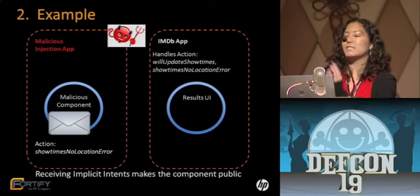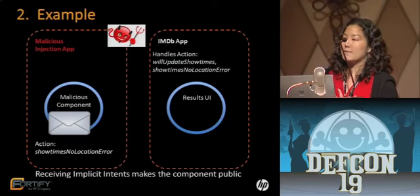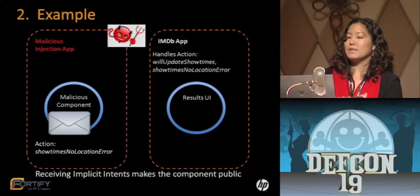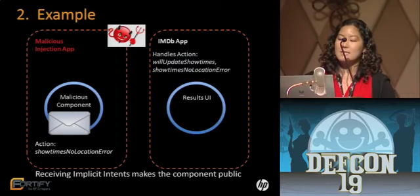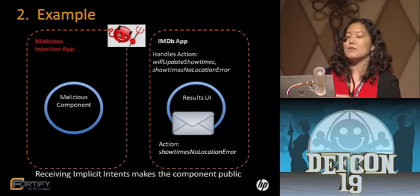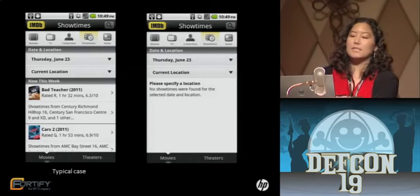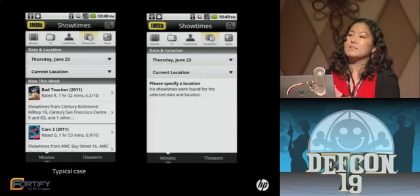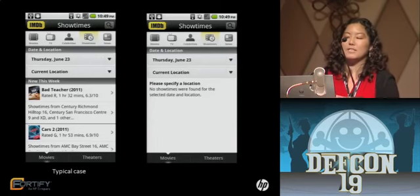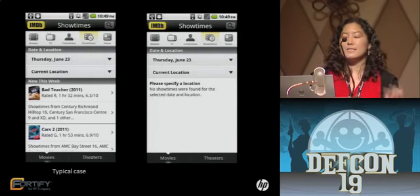Going back to the IMDB example — the receiving component that updates with show times was receiving an implicit intent, making it public. A malicious application can send an intent directly to that component, either explicitly or implicitly. If the attacker sends a 'no location error' intent, the user gets informed there are no movie show times available — essentially a denial of service. In the same bus application, an attacker can inject fake bus information into a component, so the user would see an incorrect arrival time and potentially wait for a bus that never arrives.